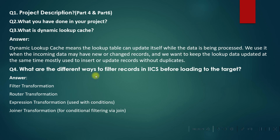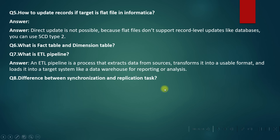Next question: what are the different ways to filter records in IICS before loading to the target? There are many methods — you can filter records by using the Filter transformation, Router transformation, Expression transformation, and the Joiner transformation.